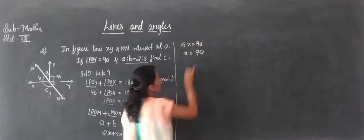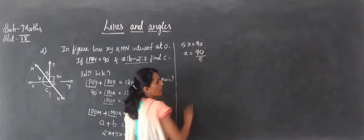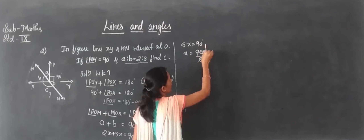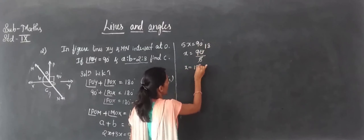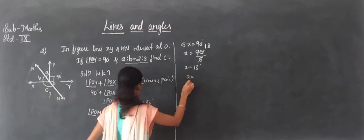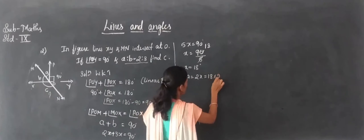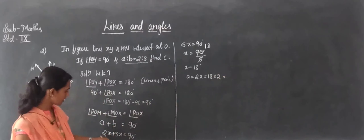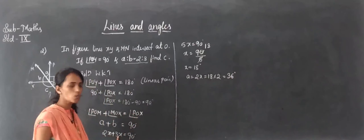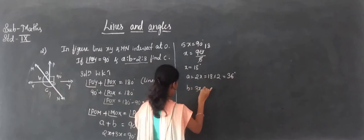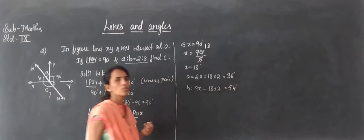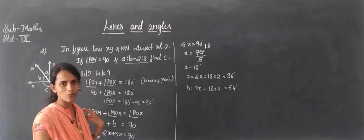So 2x plus 3x gives 5x equals 90 degrees, therefore x equals 90 divided by 5, which is 18 degrees. Angle A equals 2x equals 2 into 18 equals 36 degrees. Angle B equals 3x equals 3 into 18 equals 54 degrees. And 36 plus 54 equals 90 degrees, confirming our answer.